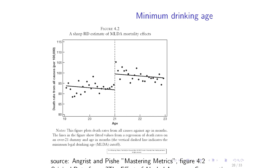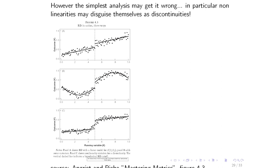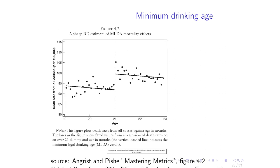This is very similar to the China example discussed previously. It's very popular — people use it at boundaries. The simplest analysis looks convincing: there is a shift upward in mortality right at 21. However, the simplest analysis may get it wrong. Nonlinearities can disguise themselves as discontinuities.